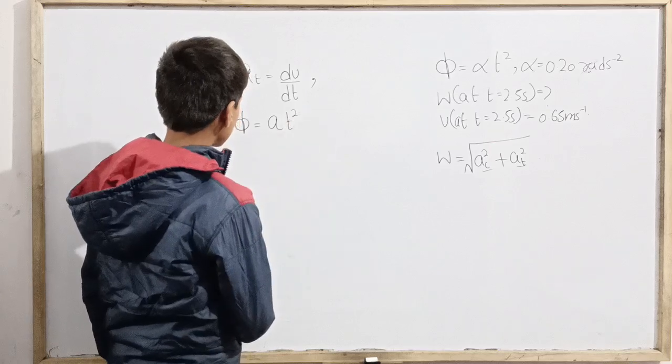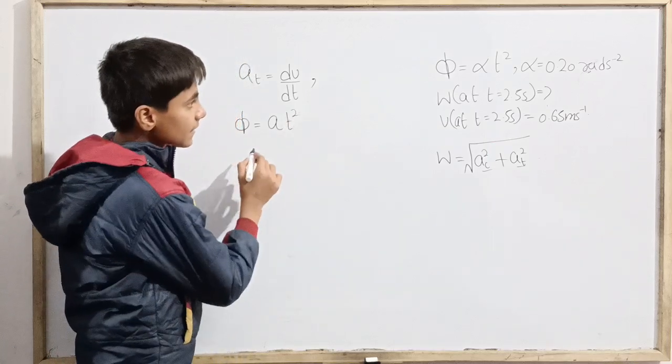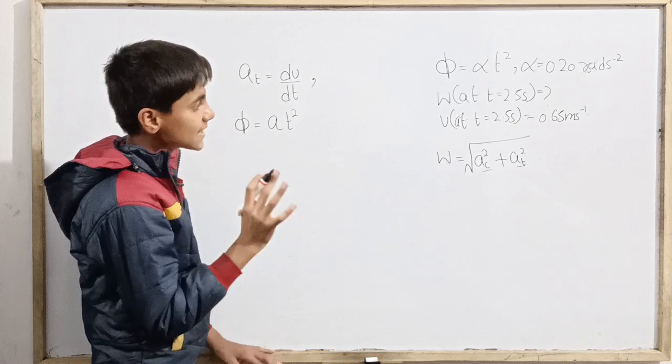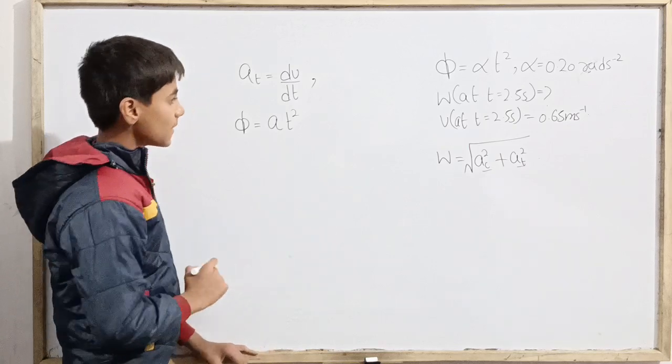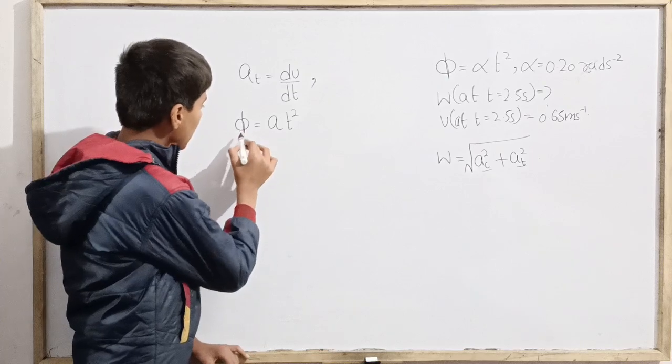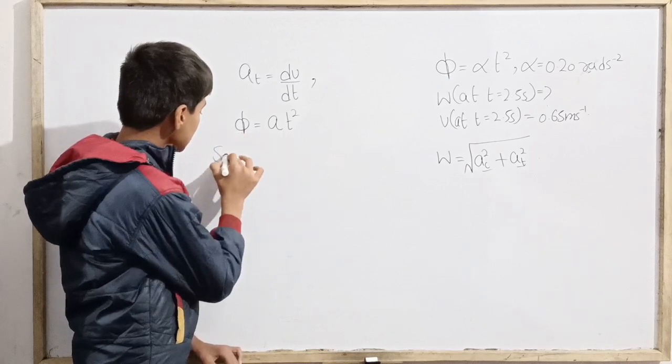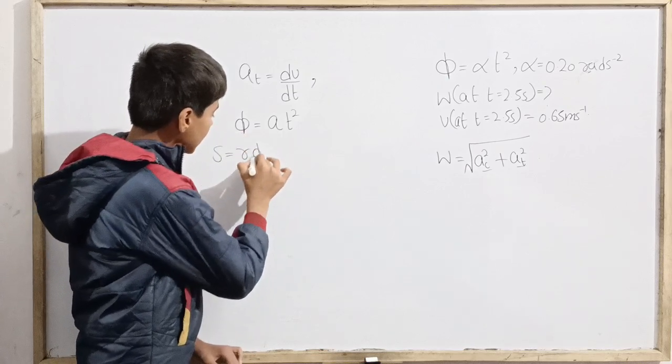So phi is given to be a times t squared, and then the velocity, that's rather speed, at t equals 2.5 seconds is 0.65 meter per second. So phi is at squared given. We see that s will be r times phi, the linear distance.